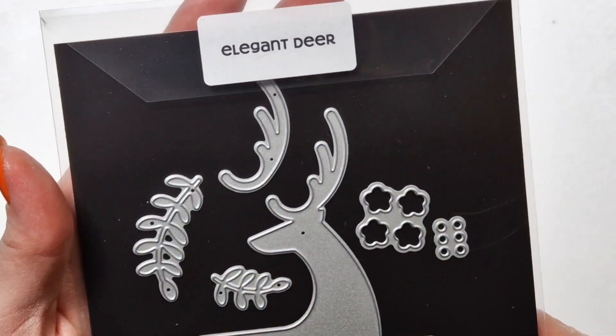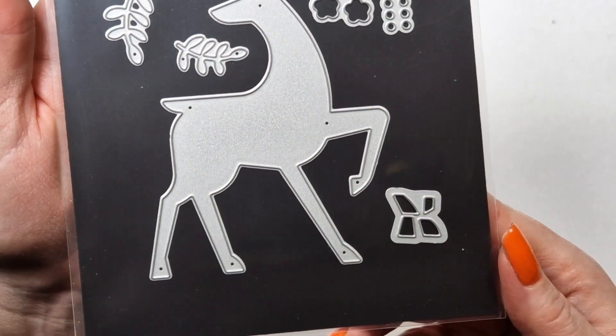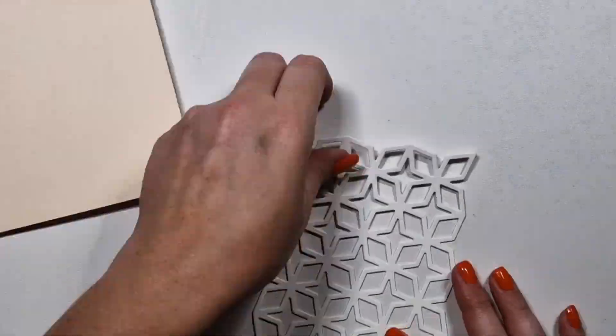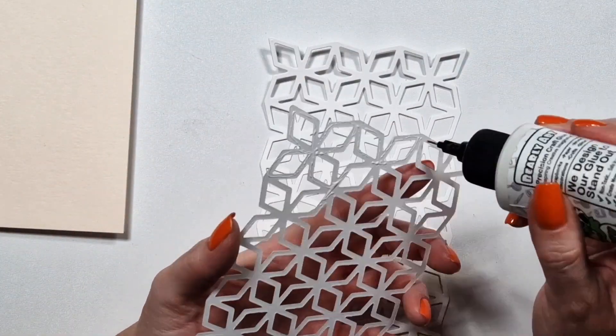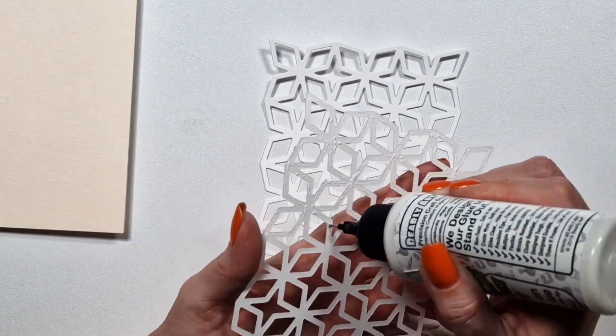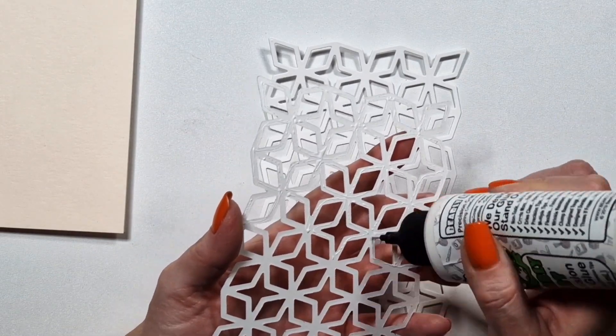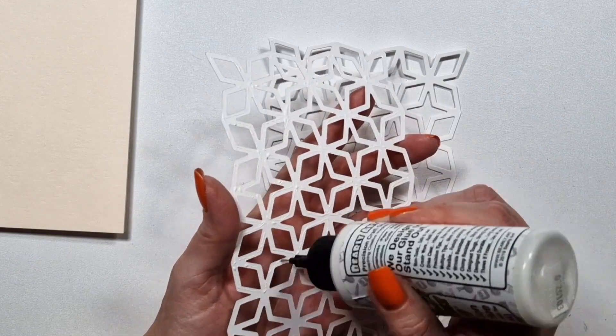The first one is the Geostar's background then there is the Elegant Deer and the Geostar's background was designed for a 5 by 7 inch card base but it will not cover the whole card base. That's the nature of this pattern.